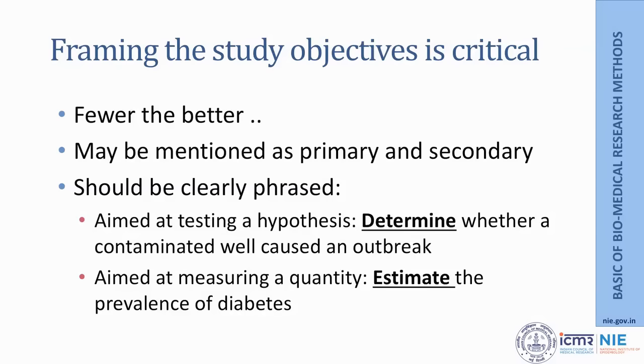Secondary endpoints are the additional pieces of information that we obtain in any research study. It is important that the objectives are clearly phrased. Normally, they could be of two types: more of an exploratory type aimed at testing a hypothesis — here we use the verb 'determine', for example, 'determine whether a contaminated well caused an outbreak' — or they could be confirmatory or estimating in nature, such as deciding the prevalence of a particular condition like diabetes in a population. We have to keep in mind and use the appropriate verbs while defining the objectives.